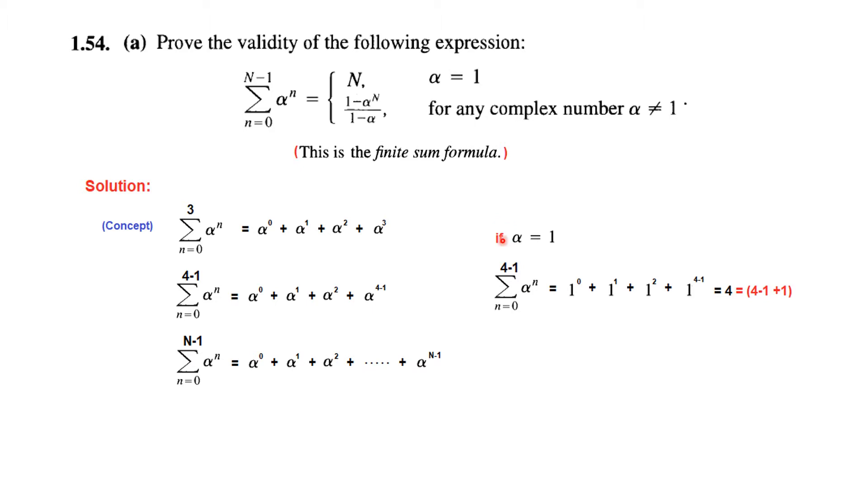And now, what will happen if alpha is equal to 1? So all the alphas will now put the values as 1. So this will be 1^0 equal to 1, 1^1, 1, 1^2, 1. So 1 power anything is 1.